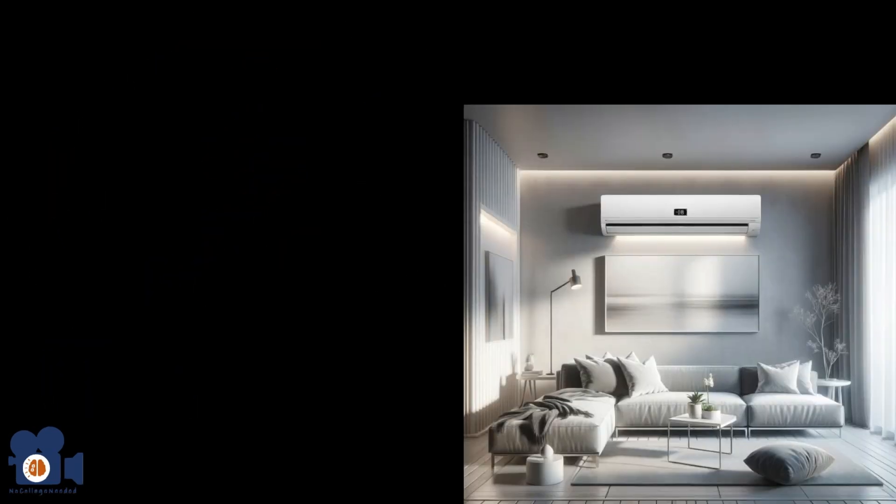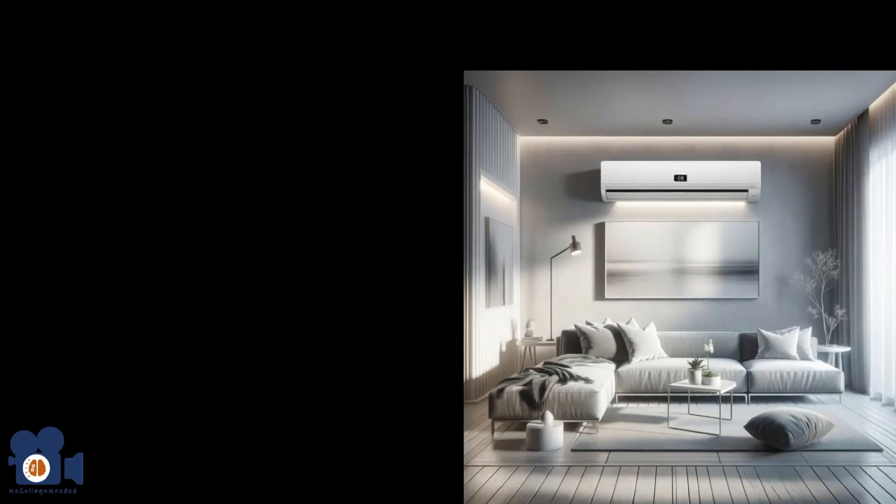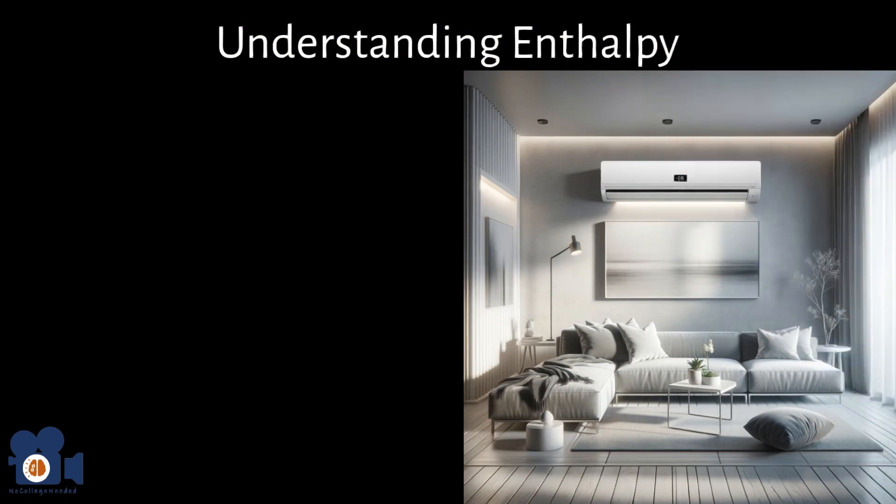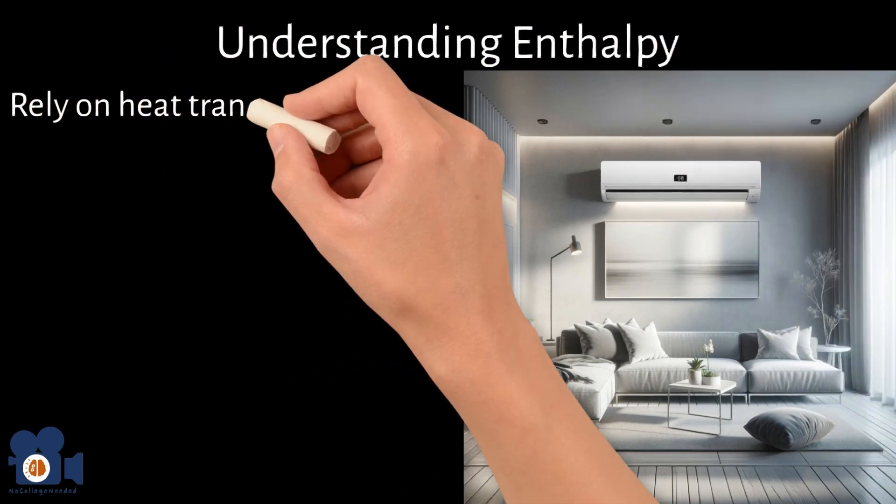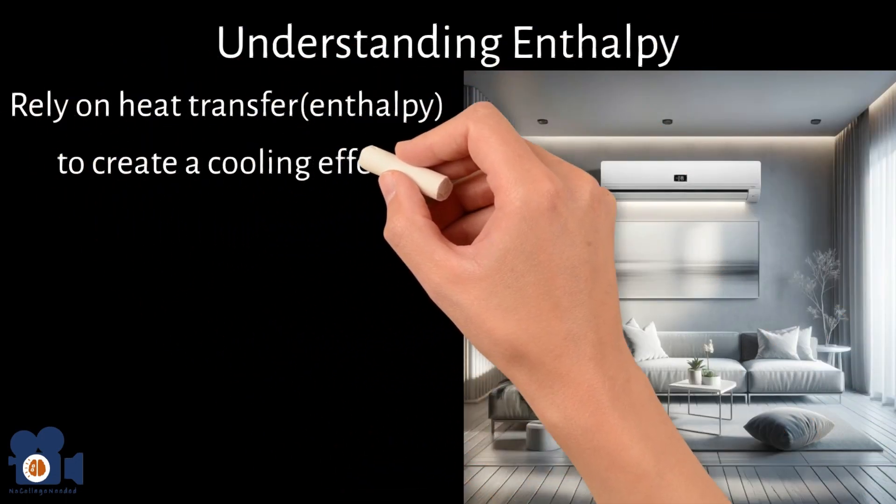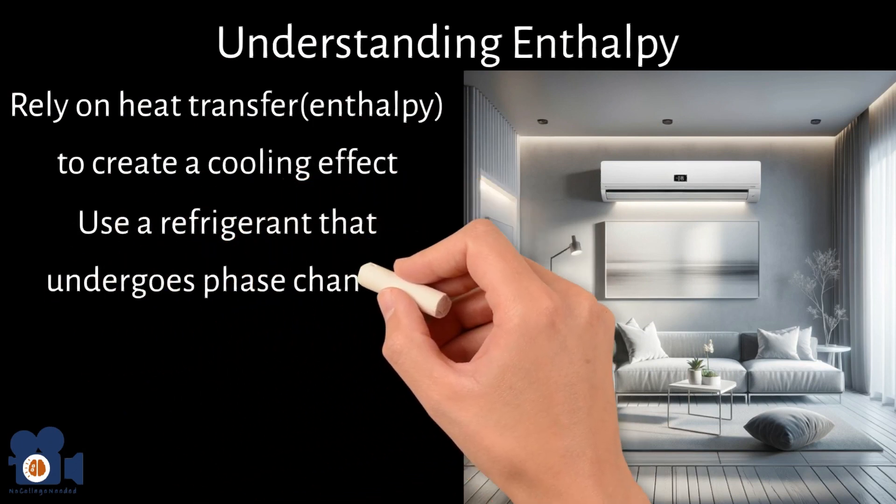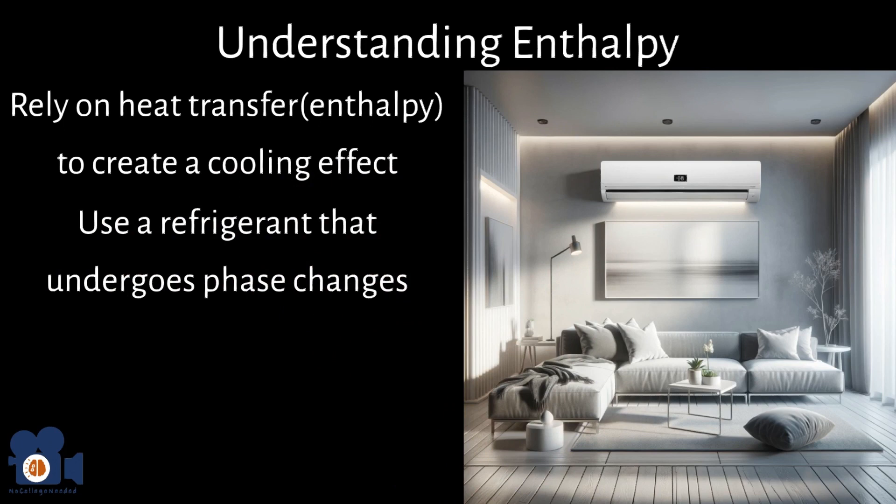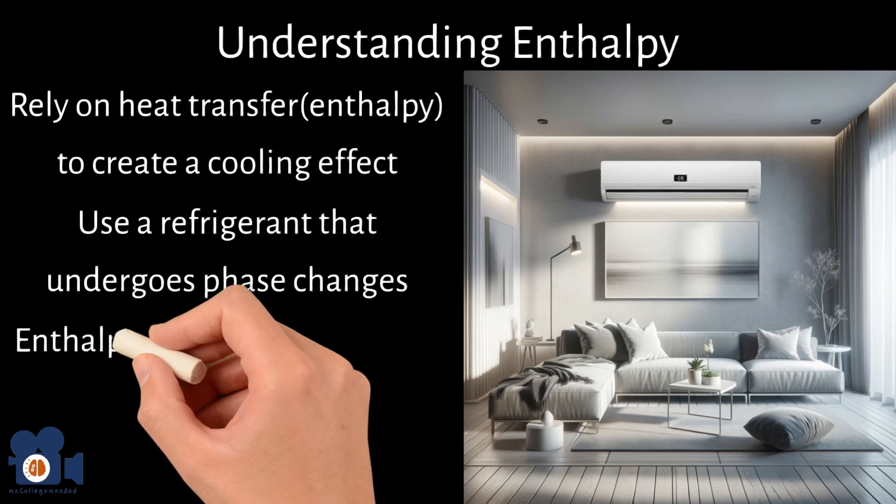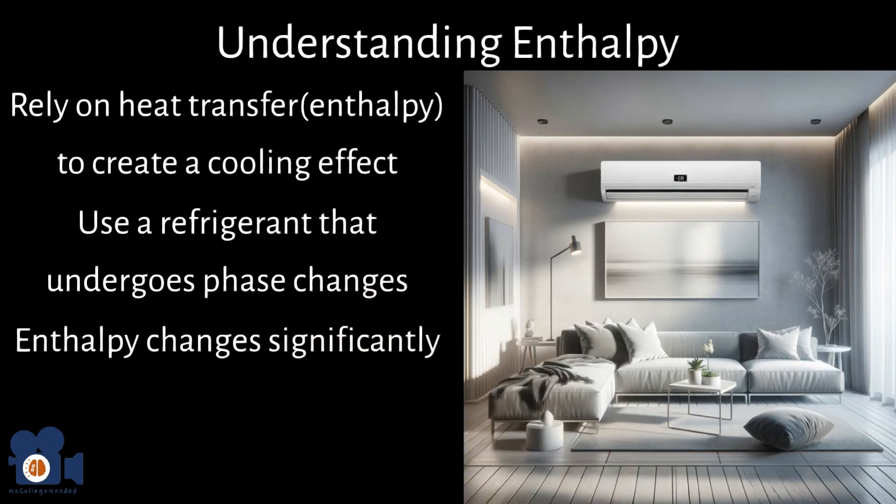For example, modern air conditioning or refrigeration wouldn't be possible without the understanding of enthalpy. These systems rely on the transfer of heat, enthalpy, to create a cooling effect. Essentially, they operate on vapor compression cycles which use a refrigerant that undergoes phase changes from liquid to gas and then back to liquid in a closed system. During these phase changes, the enthalpy of the system changes significantly, allowing for the absorption and release of heat. We'll go over the specifics of AC with a great example of its cooling effects later in the video once enthalpy is explained a bit more.